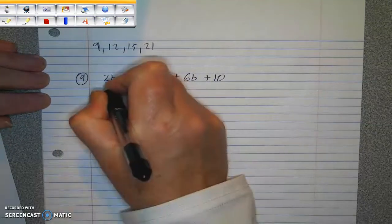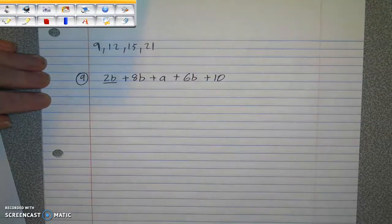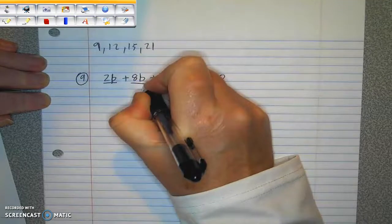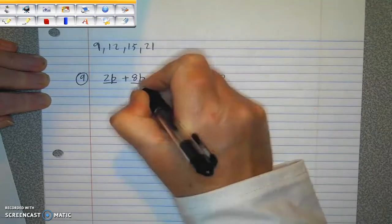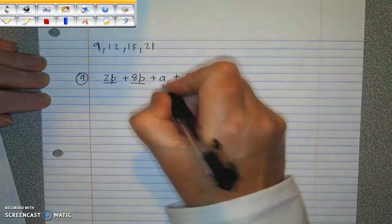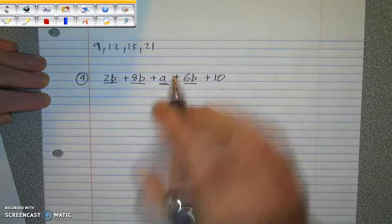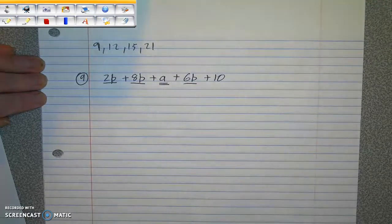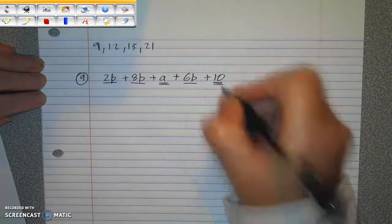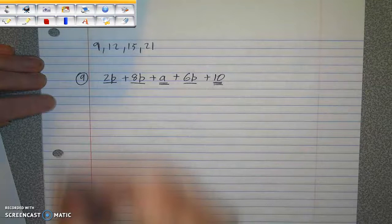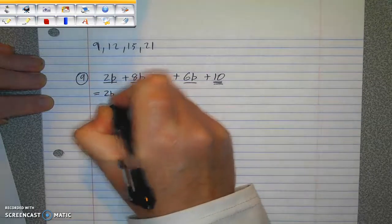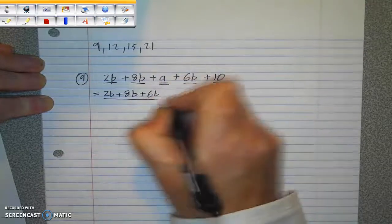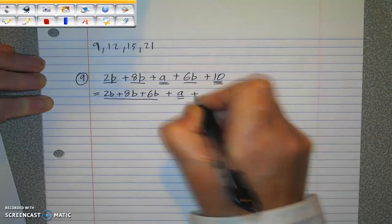This is the way I like to do it. I take the first term and underline it. It has a B, so I'm looking for all the terms that have a B, and I underline them the same way. Then I double underline the next term that is not already underlined. That's an A. Do I have any other A's? No. And then I underline with three lines the constant term, which happens to be the last one. Then you can write them all out again in order. So I've gathered all the B's together, then I have the A term, then I have the 10.